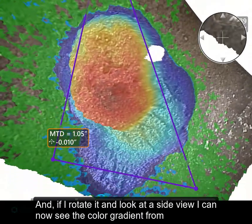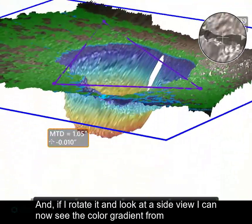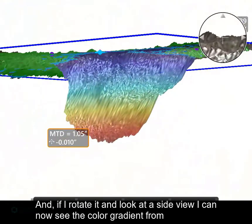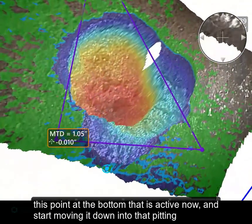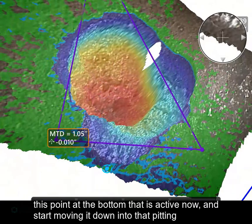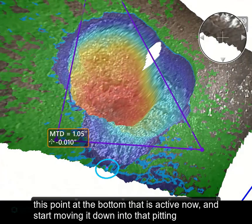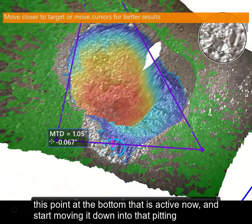And if I rotate it and look at the side view, I can now see the color gradient from this point at the bottom that is active now, and start moving it down into that pitting.